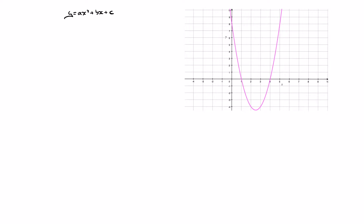Looking at our parabola, we can see that this curve cuts the x-axis twice — here at x equals one and here at x equals four. I'll give those two x-intercepts names: m equals one and n equals four. We can also see that this parabola cuts the y-axis at eight, so the y-intercept has coordinates zero, eight.